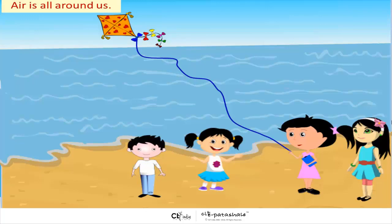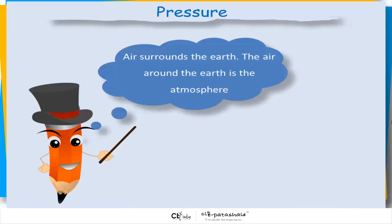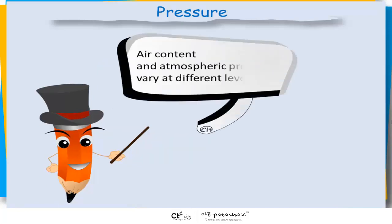Air is all around us. Air surrounds the earth. The air around earth is called atmosphere. Air content and atmospheric pressure vary at different levels.